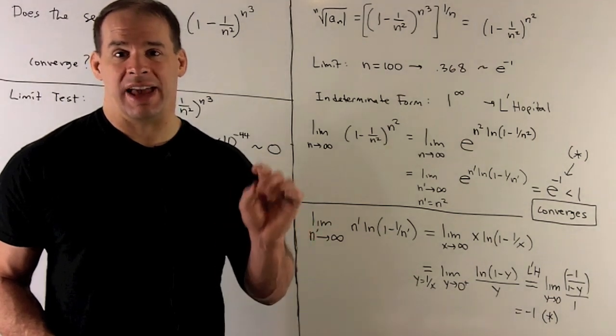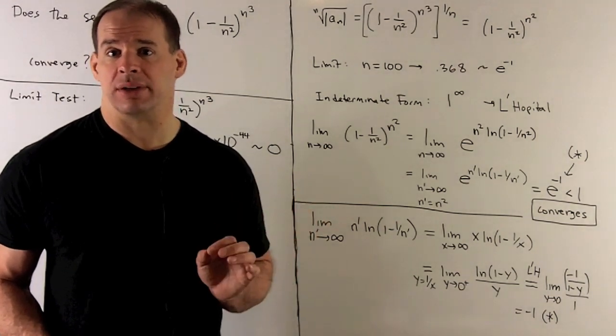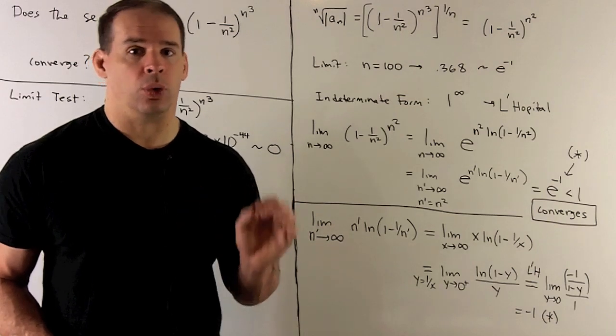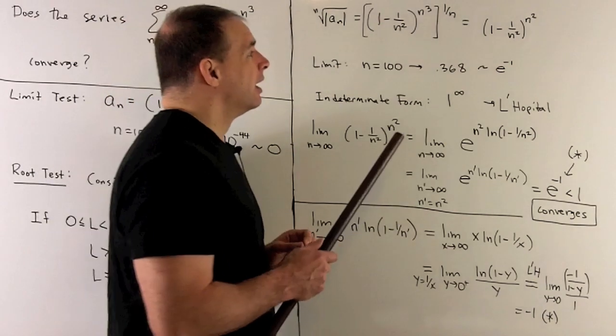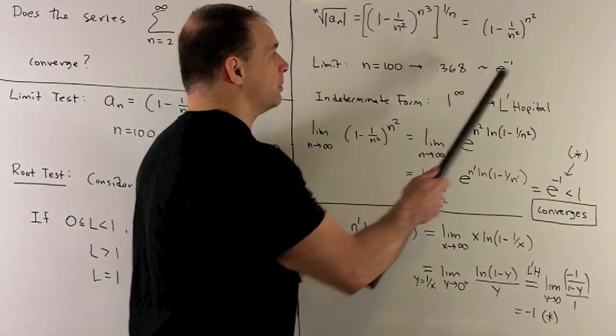If we raise to the n³ power, it's going to stay positive. Then I want to take the nth root, so it's raising to the power 1/n.